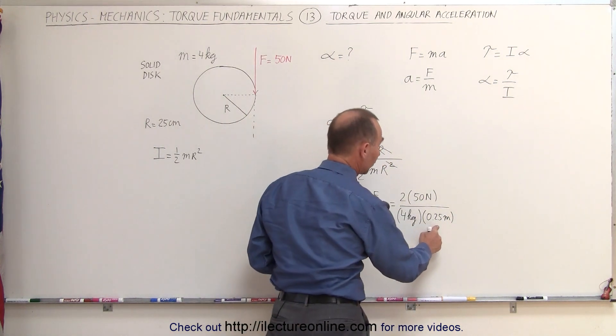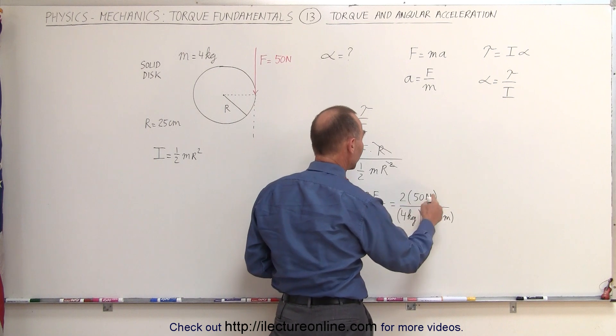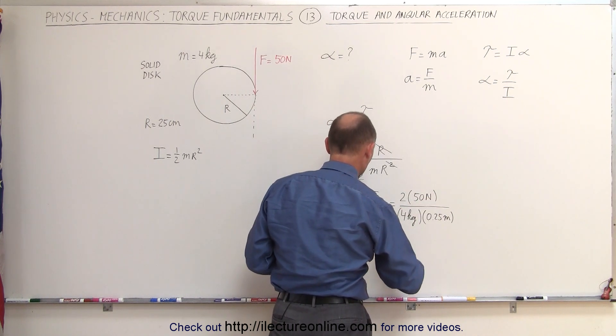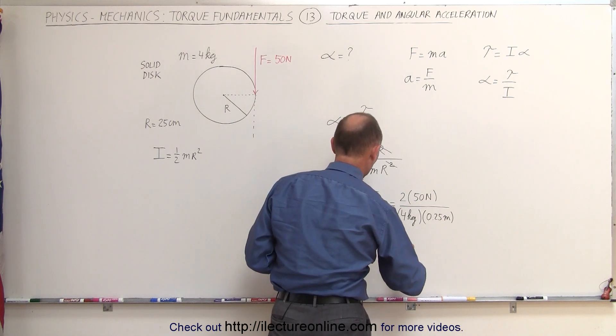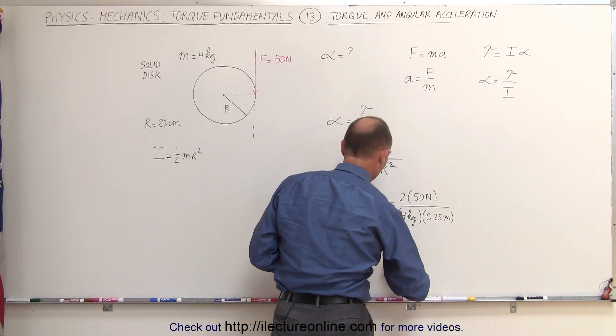4 times 0.25 is 1, 2 times 50 is 100, and the result is 100, and the units are going to be radians per second squared.